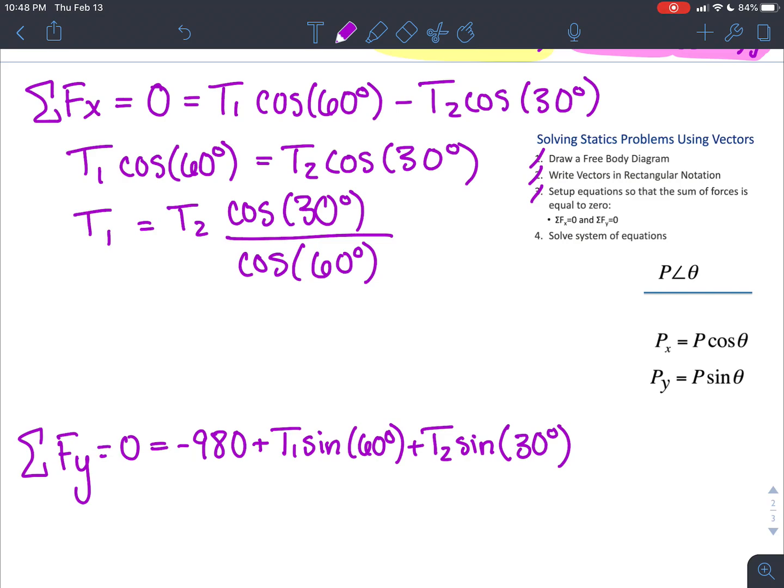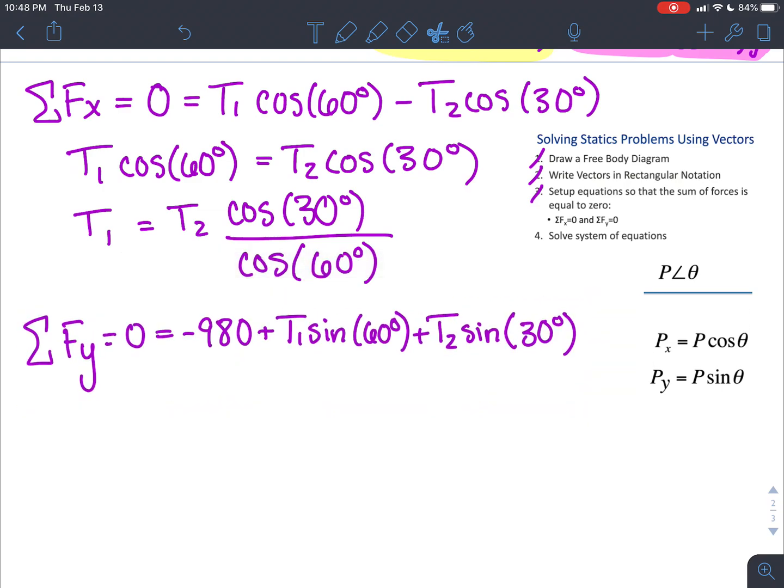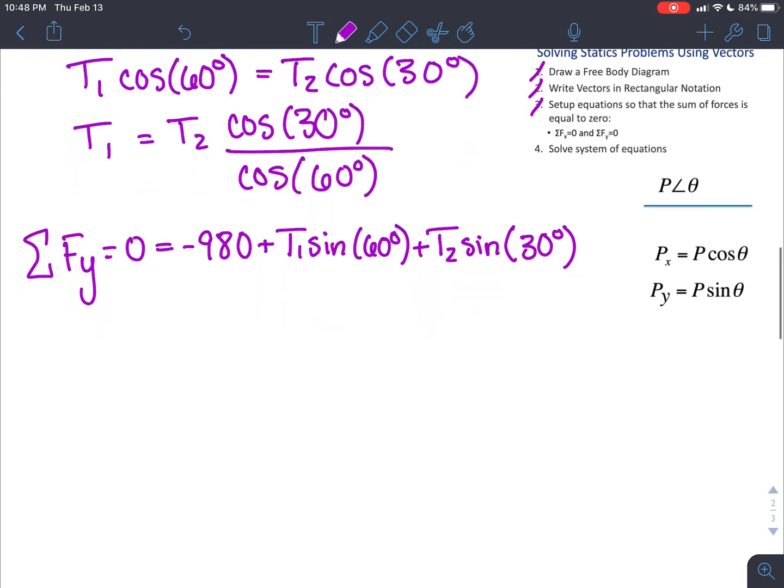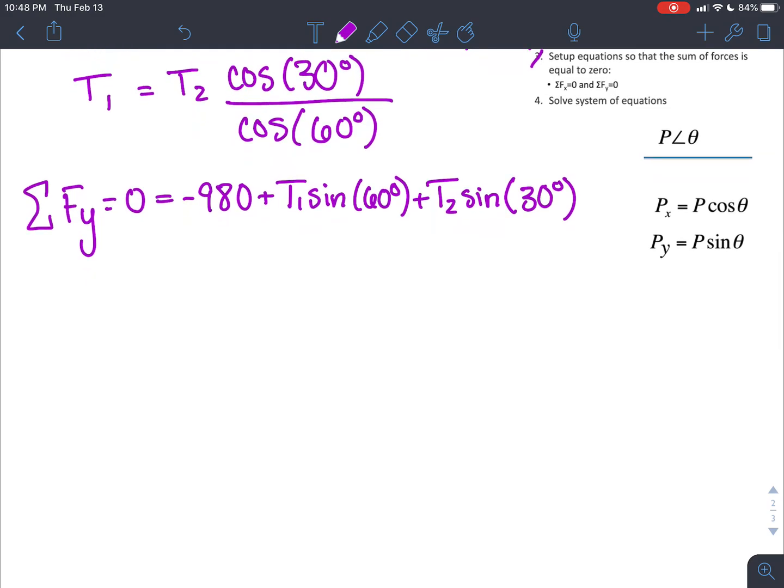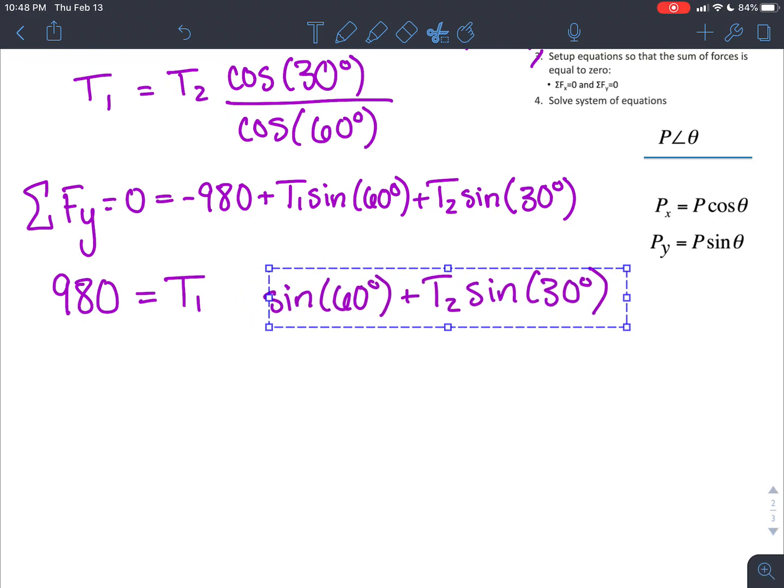Now we have something for one of our components so we can plug that into our equation for the other component. Looking at this equation we've got a negative 980 that we could move to the other side. That puts us with 980 equal to T1 sine of 60 and T2 sine of 30. We already know what T1 is from up here so we can plug that in.